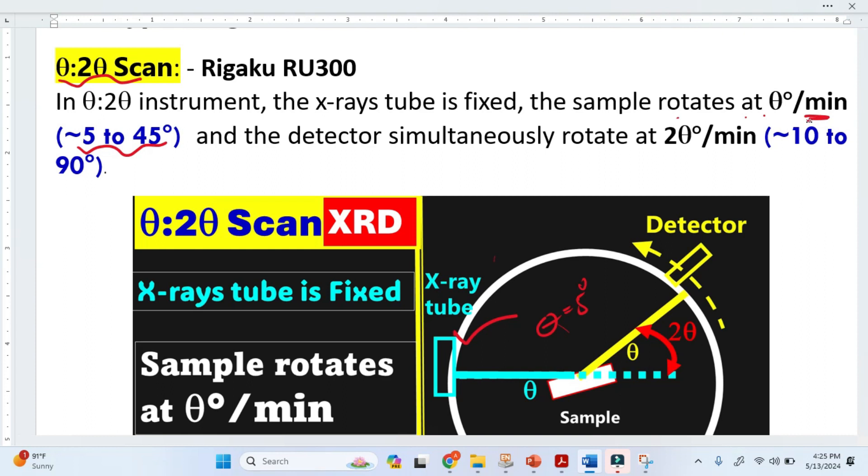Why do I use per minute? Because we have to expose the material for a long time, not seconds. The detector simultaneously rotates at 2 theta per minute, which means the detector is rotating faster.